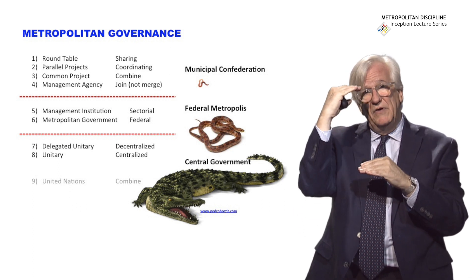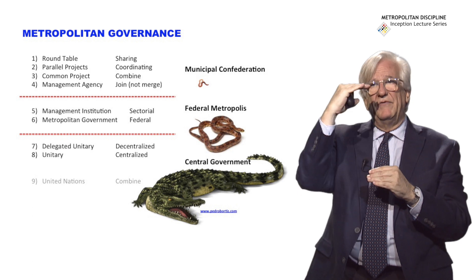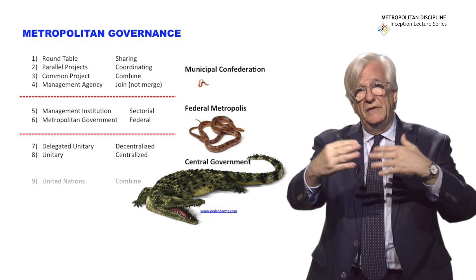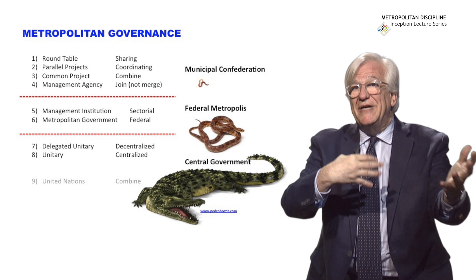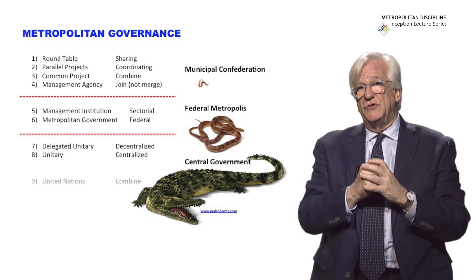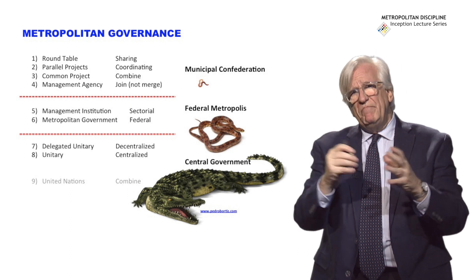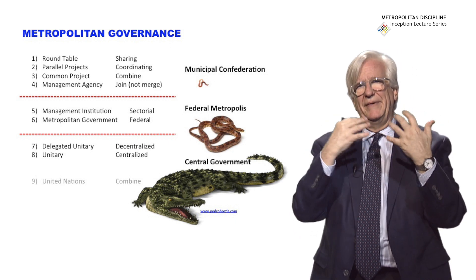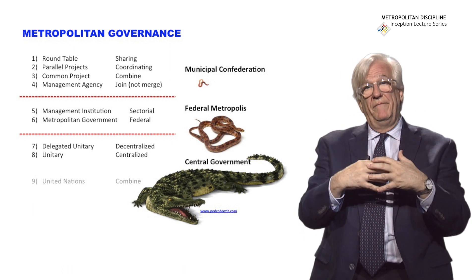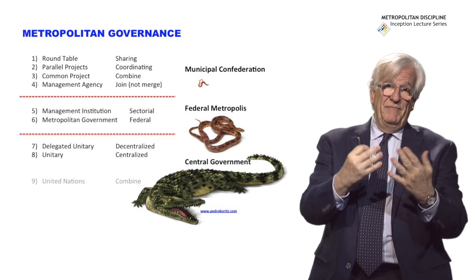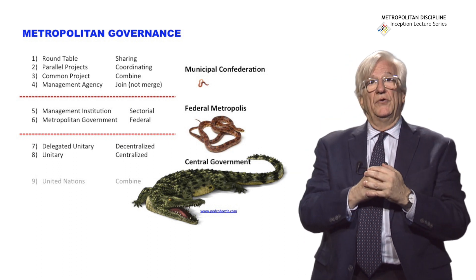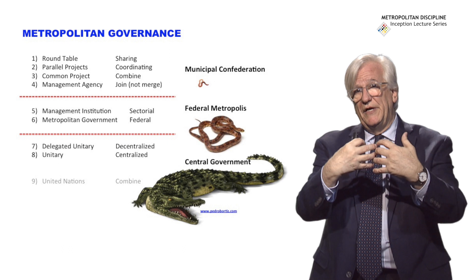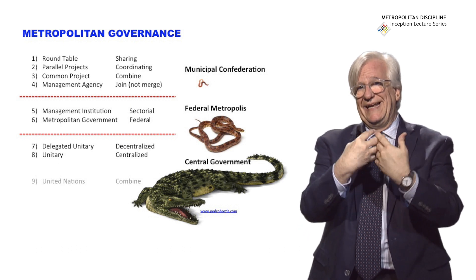The confederate approach involves bringing all mayors together at a round table to share projects, copy each other's projects, do projects together, and create agencies to manage them. Many multilaterals — the World Bank, the Inter-American Development Bank, the Asian Development Bank — promote this kind of approach. But that has a limit, and beyond that limit you either have the delegated unitary approach, like the French préfet, or the federal approach where the delegated leader is elected by the population.